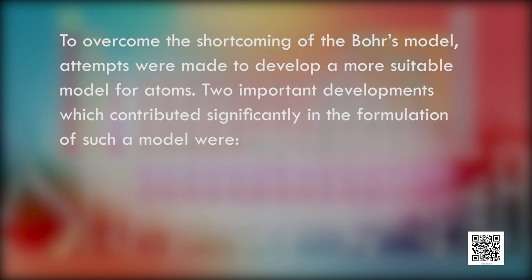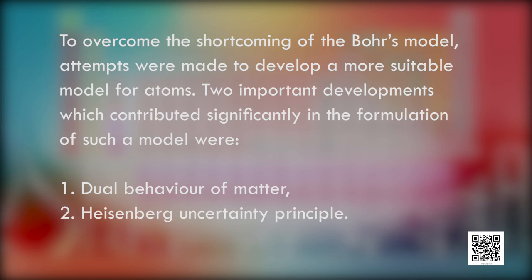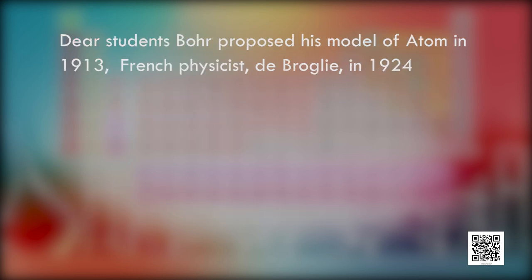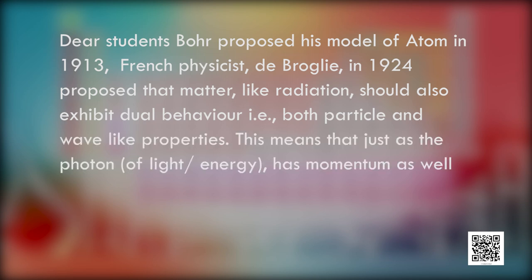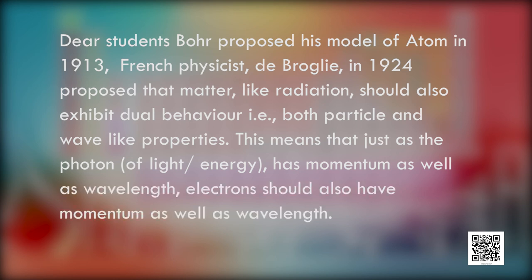Two important developments which contributed significantly in the formulation of such a model were the dual behavior of matter and Heisenberg's uncertainty principle. Bohr proposed his model of atom in 1913. French physicist de Broglie in 1924 proposed that matter, like radiation, should also exhibit dual behavior — that is, both particle and wave properties. This means that just as a photon of light has momentum as well as wavelength, electrons should also have momentum as well as wavelength.